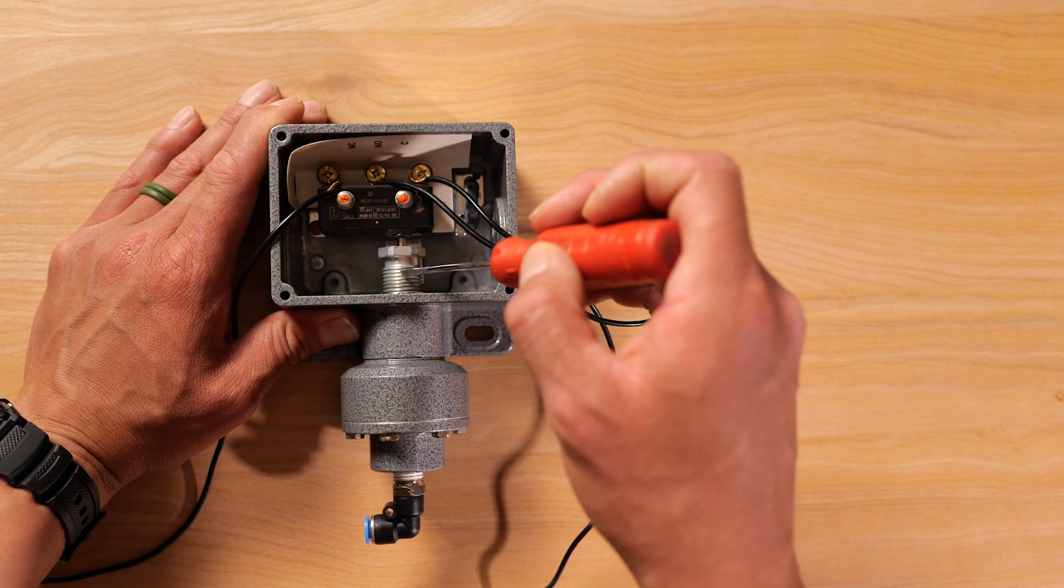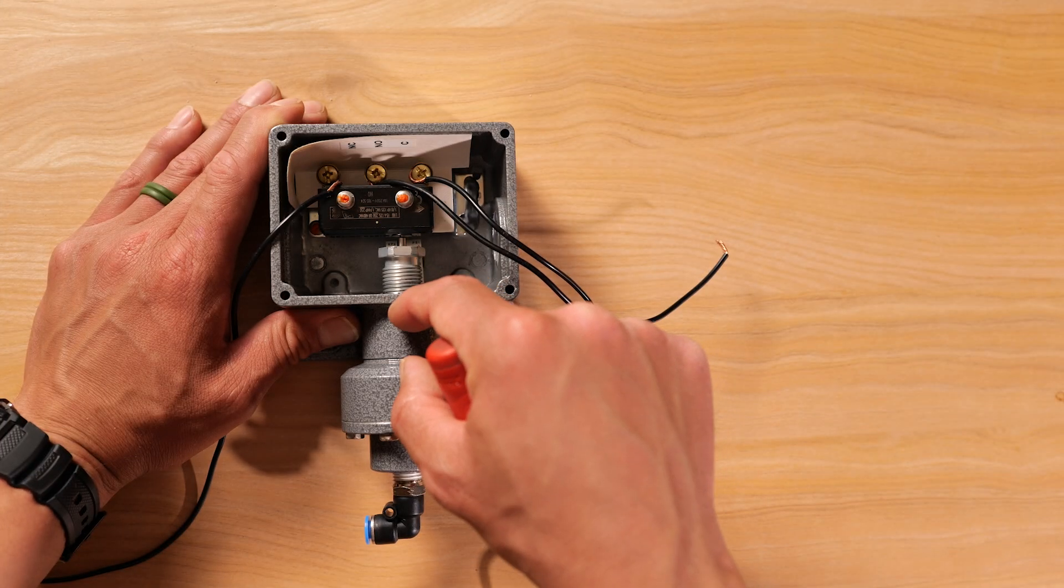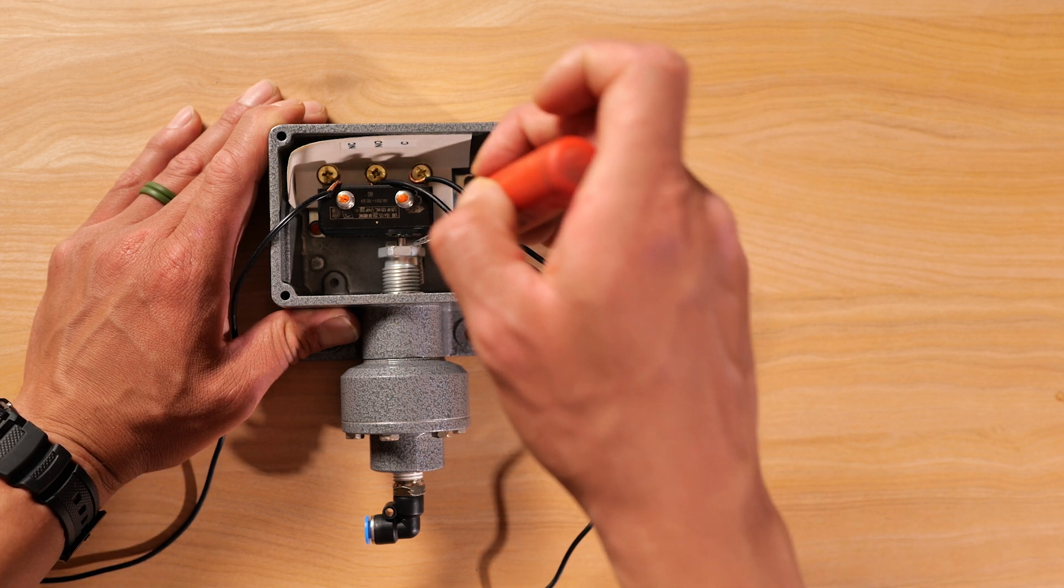And the further you go down, the more pressure you're applying on the range spring. So the further you go down, the more pressure, the higher set point you'll have.